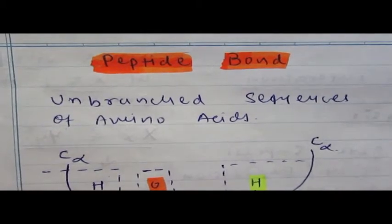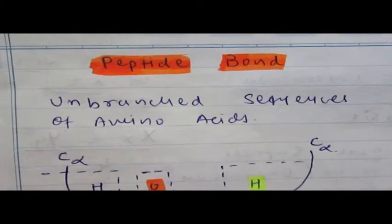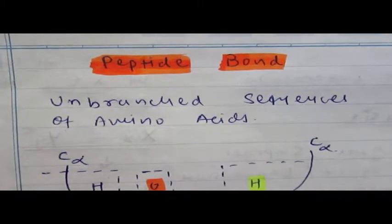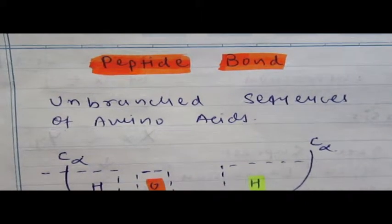Hello friends, today we will discuss very short notes on peptide bond. You all know that peptide bond is an unbranched sequence of amino acids where two or more amino acids join together to form dipeptides, tripeptides, etc.